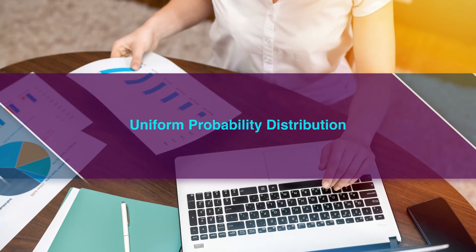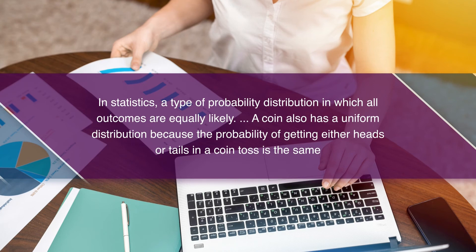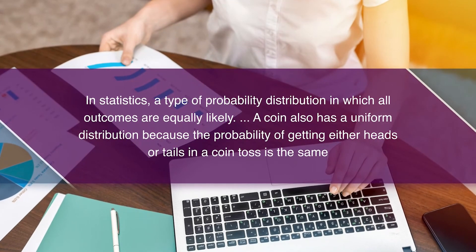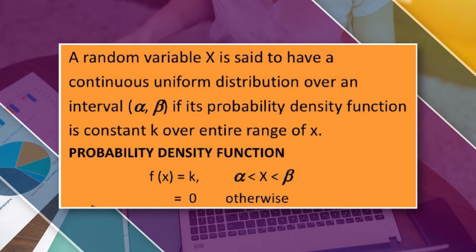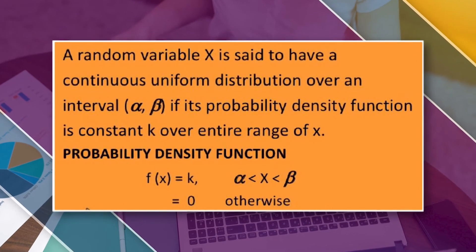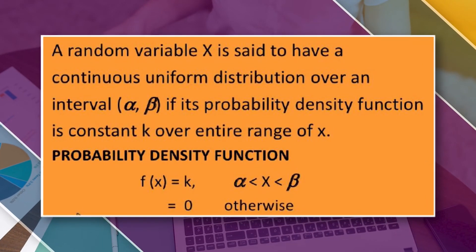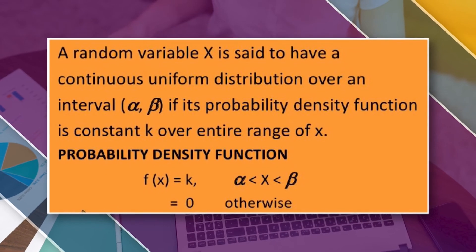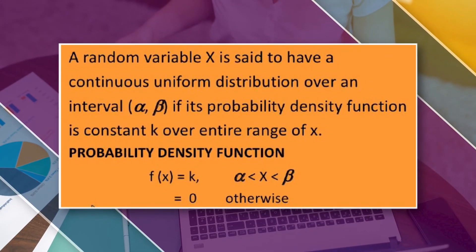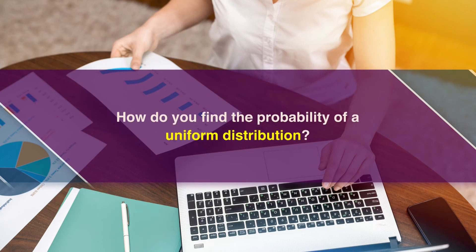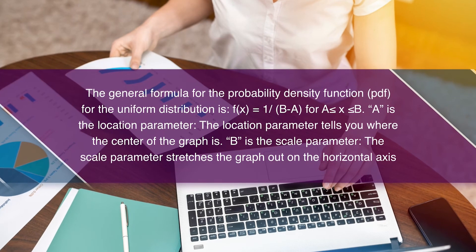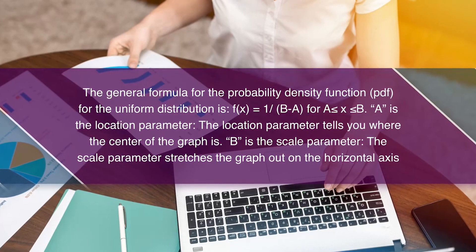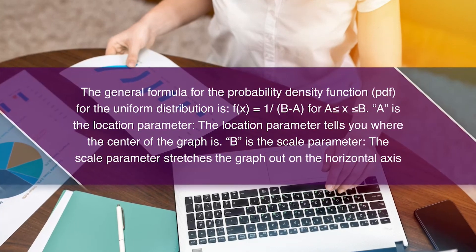The second type is the uniform probability distribution. In statistics, it is a type of probability distribution in which all outcomes are equally likely. A coin has a uniform distribution because the probability of heads or tails is the same. A random variable x is said to have a continuous uniform distribution over an interval (α, β) if its probability density function is constant k over the entire range of x. The general formula is f(x) = 1/(b−a) for a ≤ x ≤ b, and 0 otherwise.